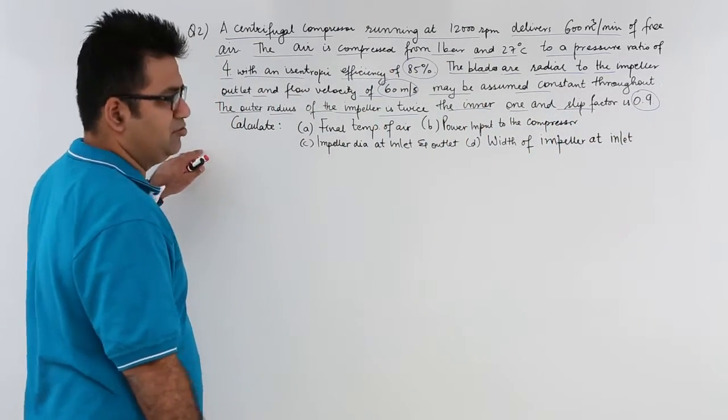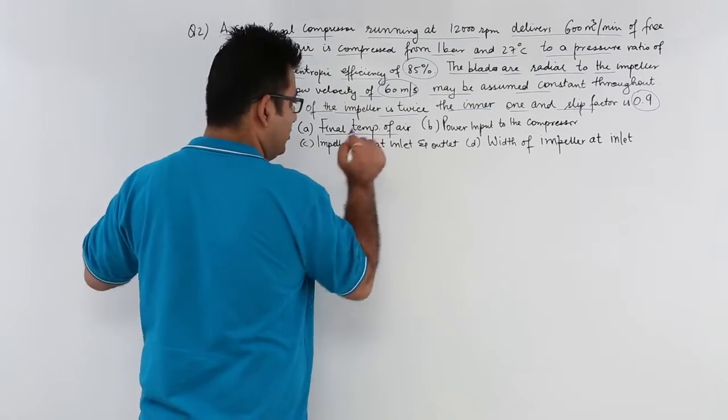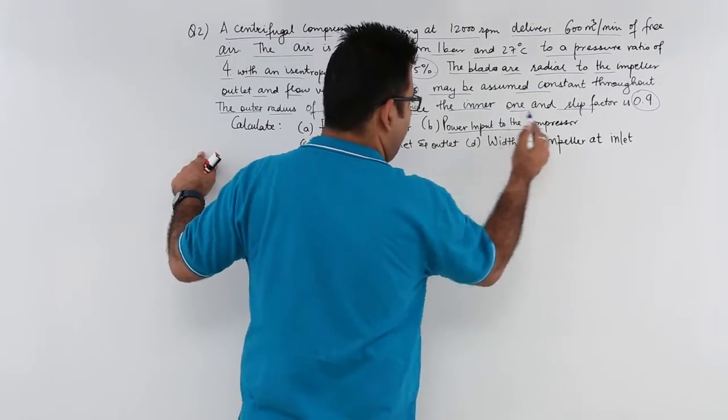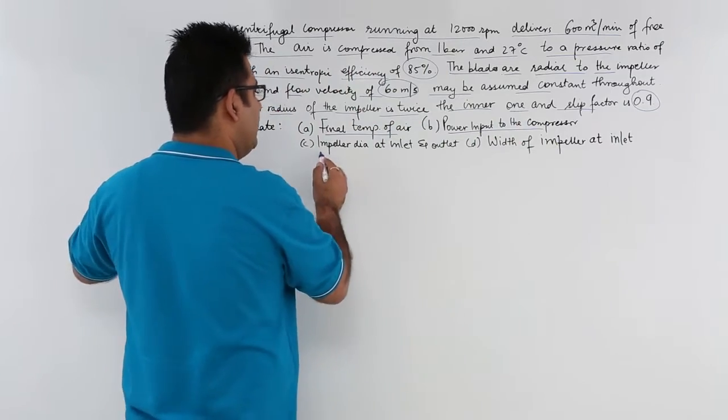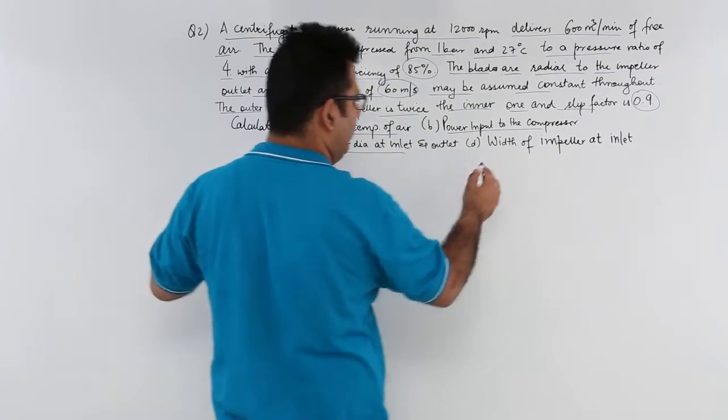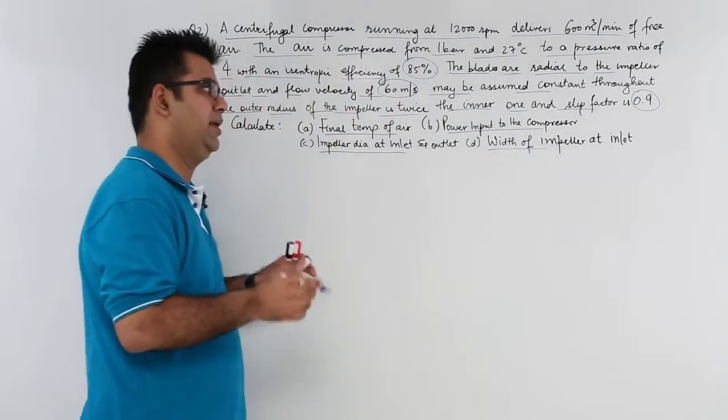There are 4 things to find out. The first one is the final temperature of air, second is the power input to the compressor, third is the impeller diameter at inlet and outlet, and the last is the width of the impeller at inlet.